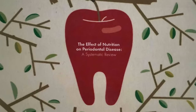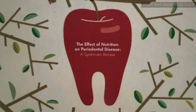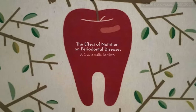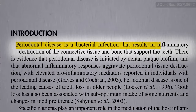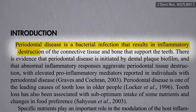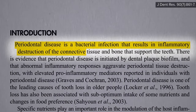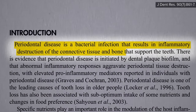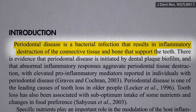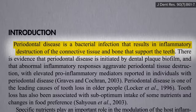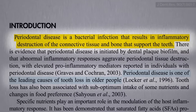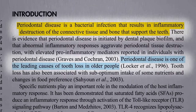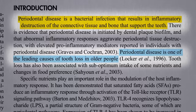What's the effect of nutrition on periodontal disease? Periodontal disease is a bacterial infection that results in inflammatory destruction of the connective tissue and bone that supports the teeth, and is therefore one of the leading causes of our teeth falling out.